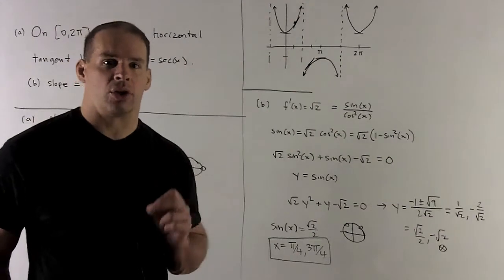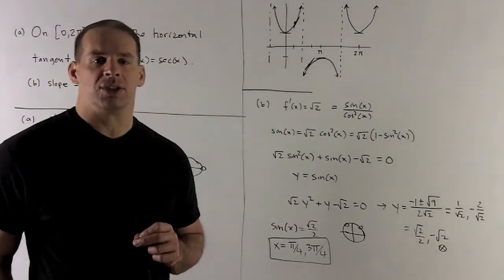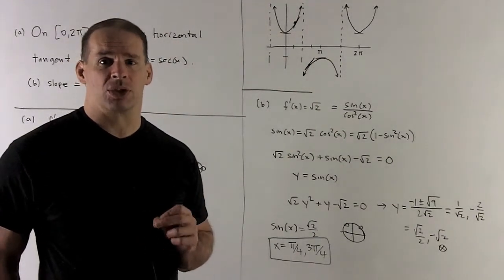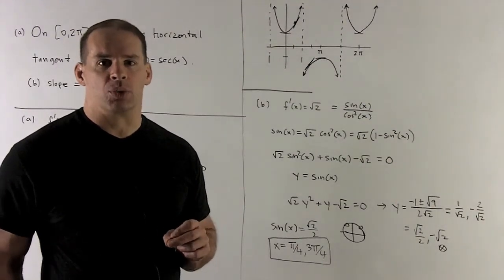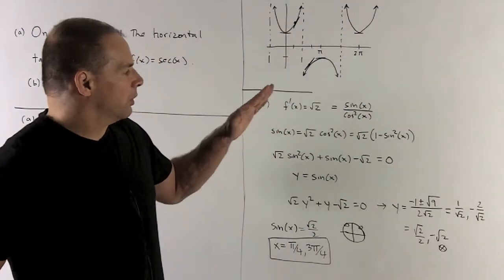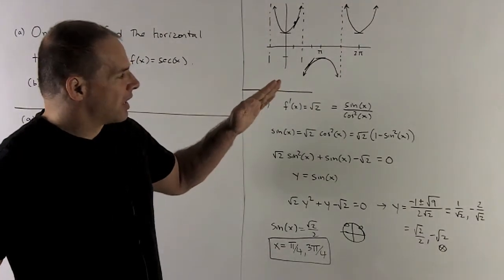Okay, let's take a look at the graph. So what we're looking for is, where is the slope equal to √2? Well, to get an idea, what we're really looking for is, where is that tangent line going to be equal to some positive number that's kind of like that?